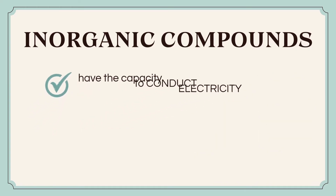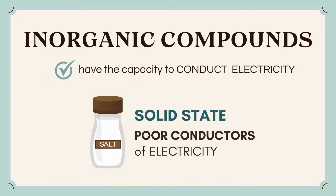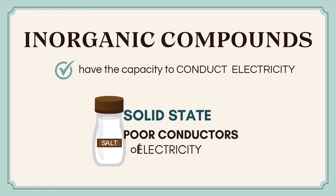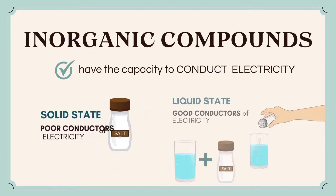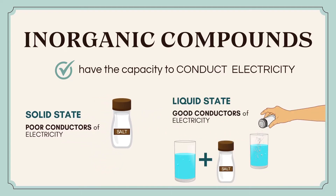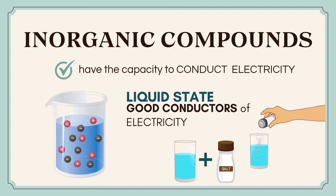For instance, while in solid state, inorganic compounds are poor conductors of electricity. And in the liquid state, inorganic compounds are profoundly conductive. In this stage, inorganic compound electrons can move uninhibitedly, and this movement of electrons is noted as electricity.